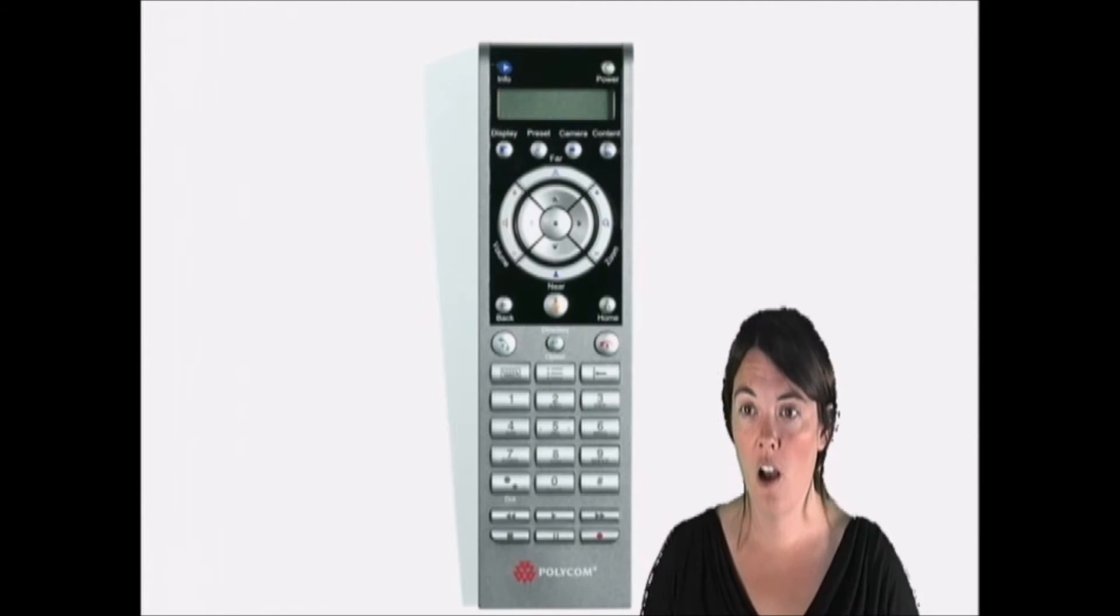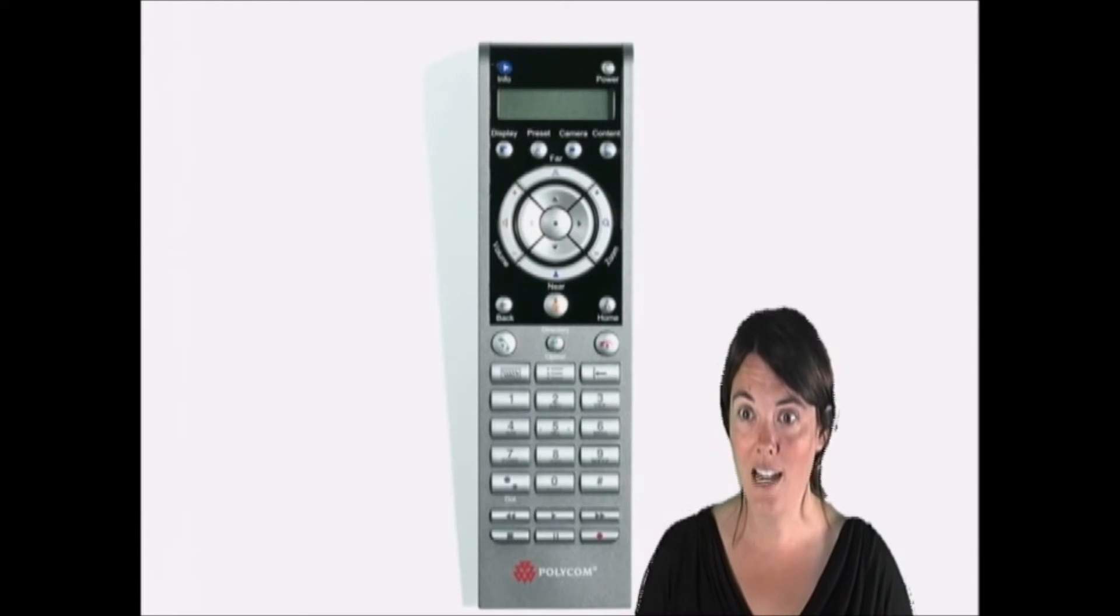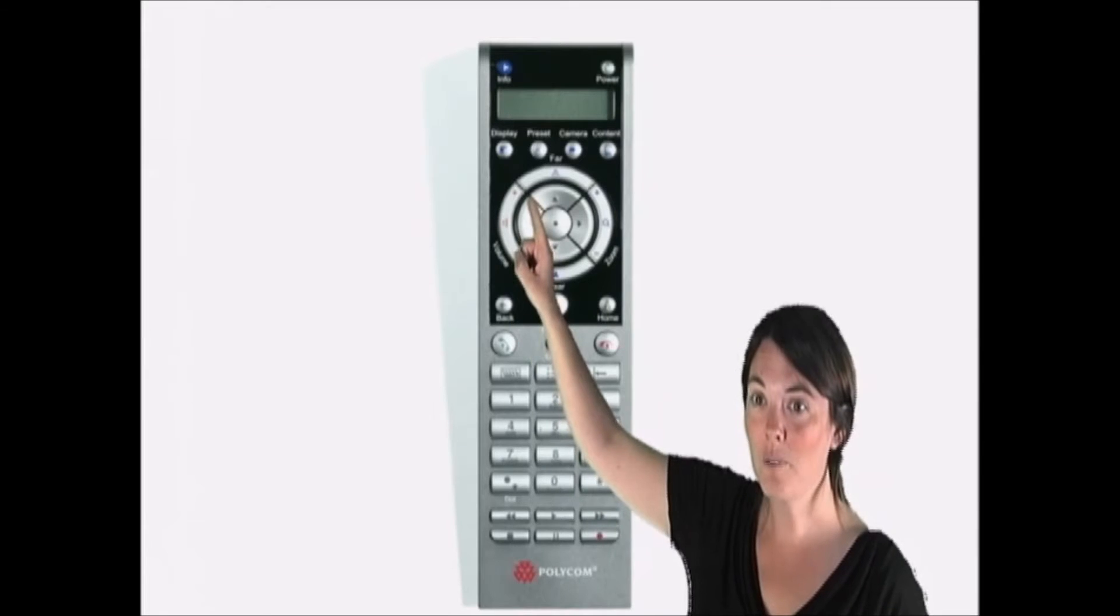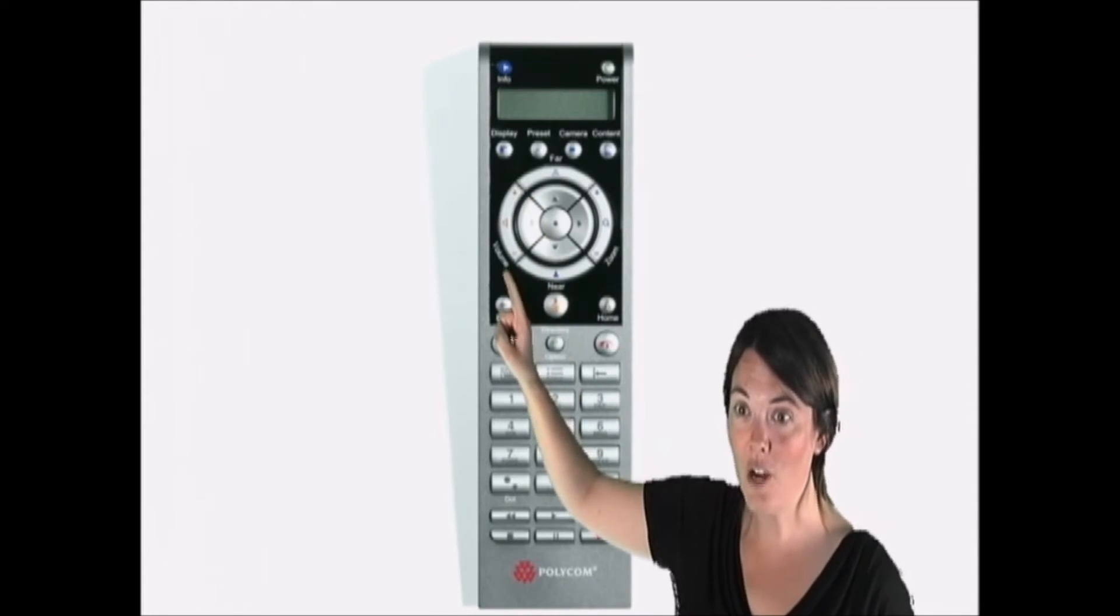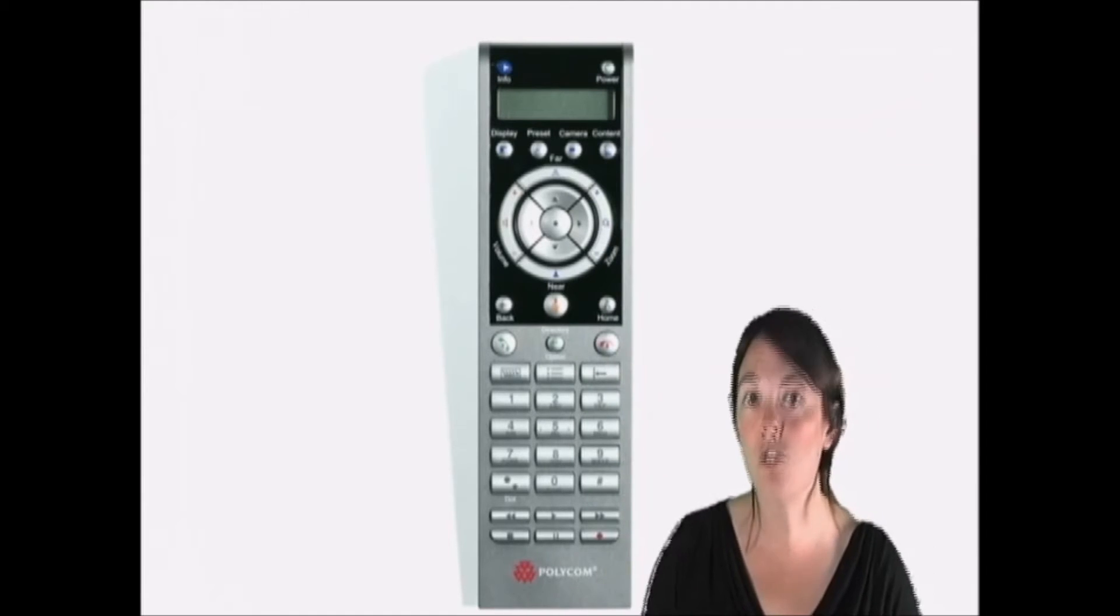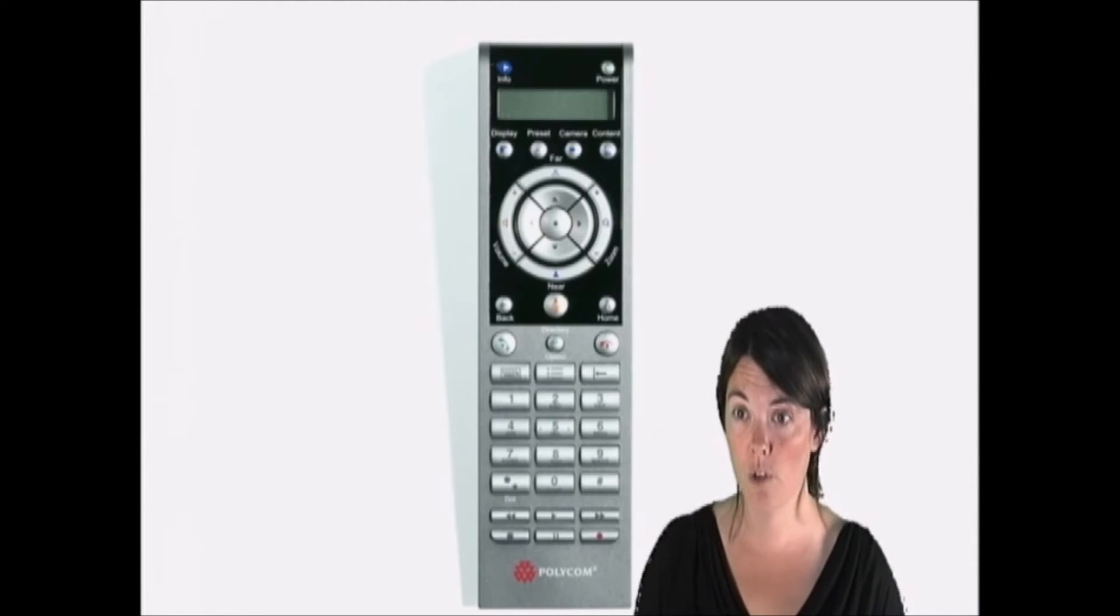Once your system is on, I'm going to show you a few more buttons, then we'll learn how to connect. So, on the left side of your remote, you see the volume control, plus for high, minus for low. Also, on the right-hand side, you'll see the zoom. This way, you can zoom in on particular students or maybe even an object that you'd like to share with the other groups.